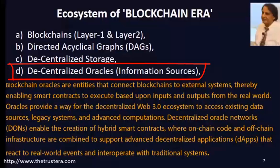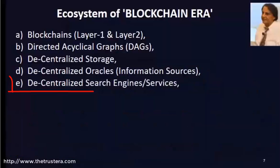There are also decentralized oracles, which are information sources that exist on the blockchain. They are a very important part of the ecosystem — sources that can be queried for validating or getting instant reference data, like weather, currency rates, exact flight times, or historic data that blockchains might use.